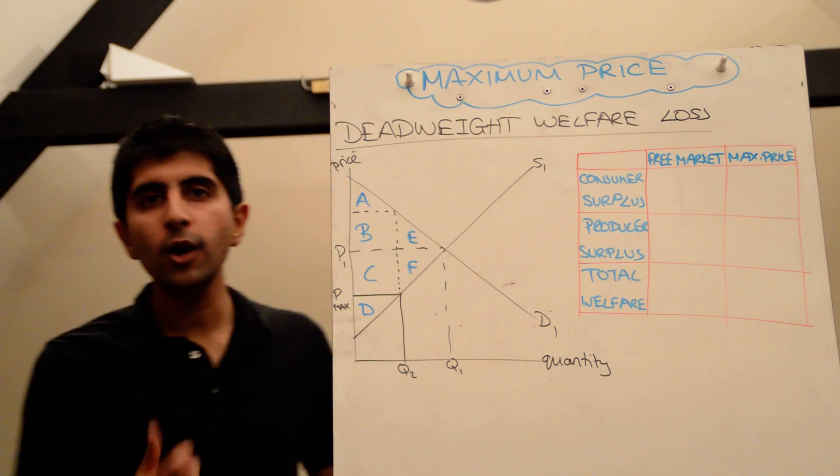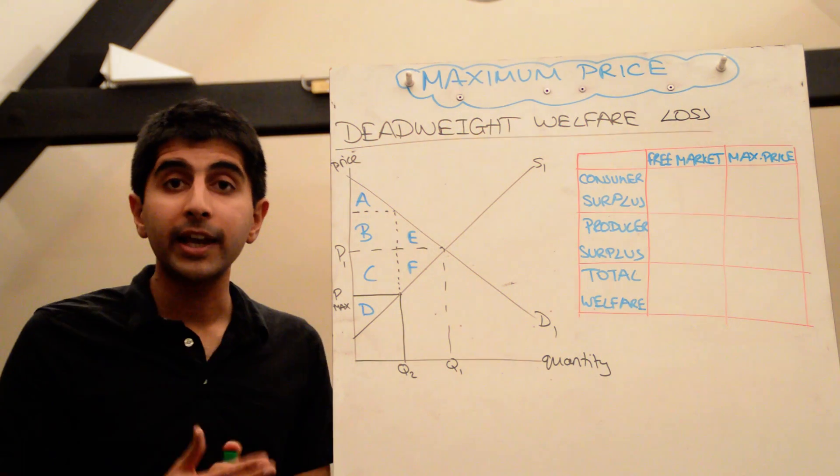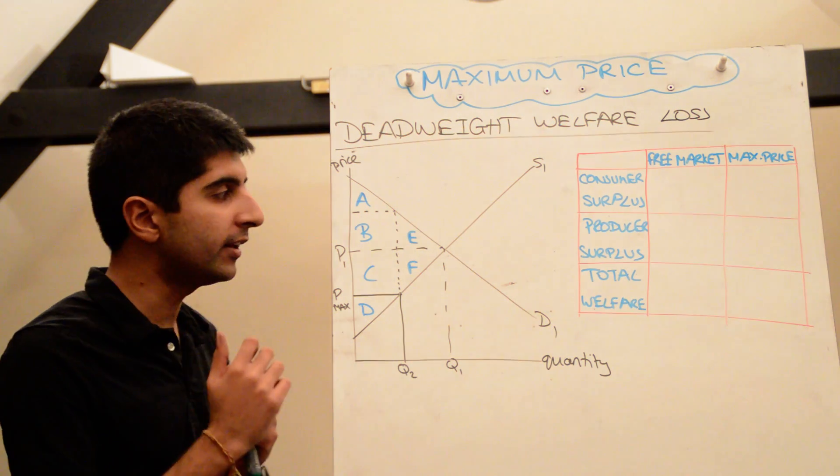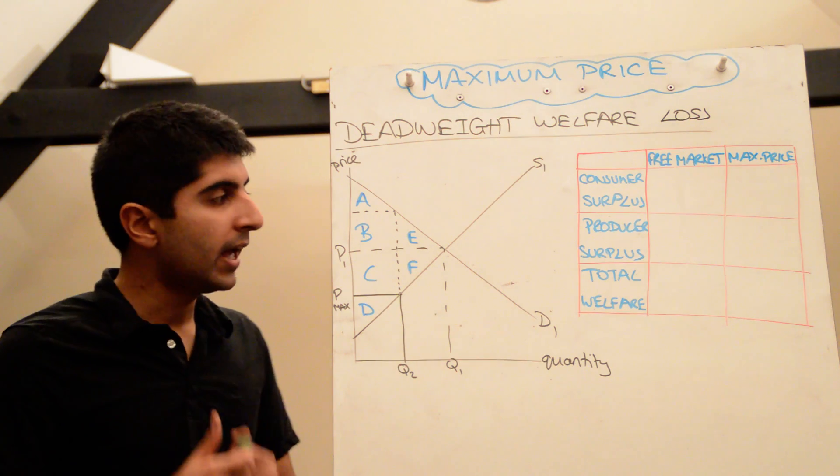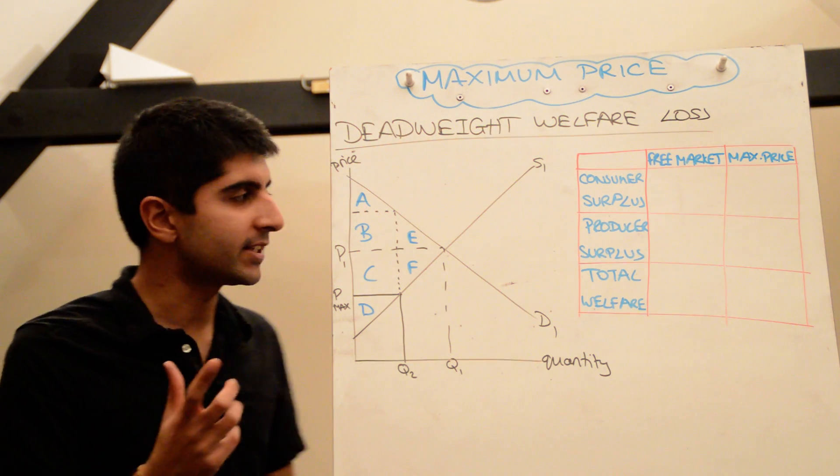Hi everyone. In my video on maximum prices, I talked about how a maximum price can actually cause a deadweight loss. I shaded it in a triangle which showed that, and I said if you really want to understand it, watch this video to get your head around it.